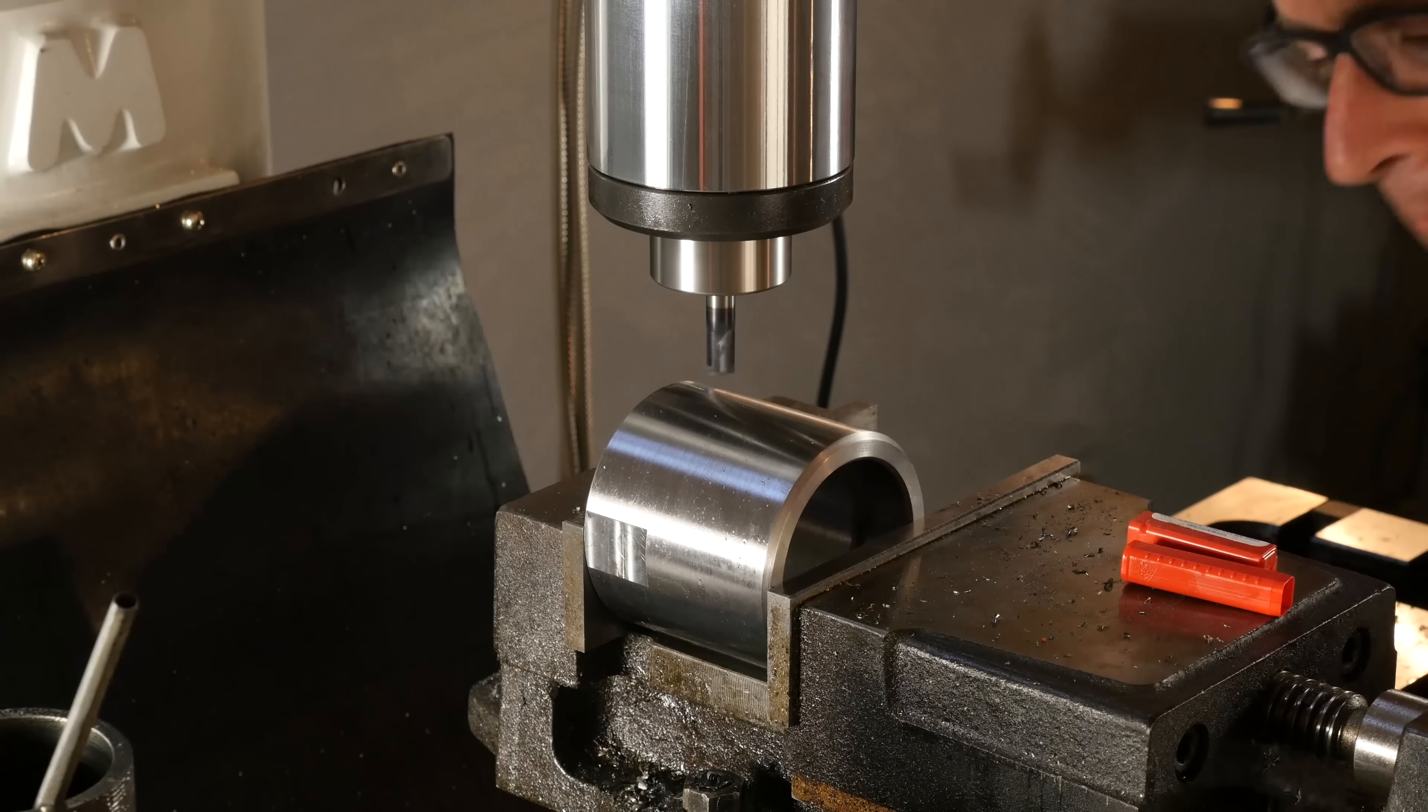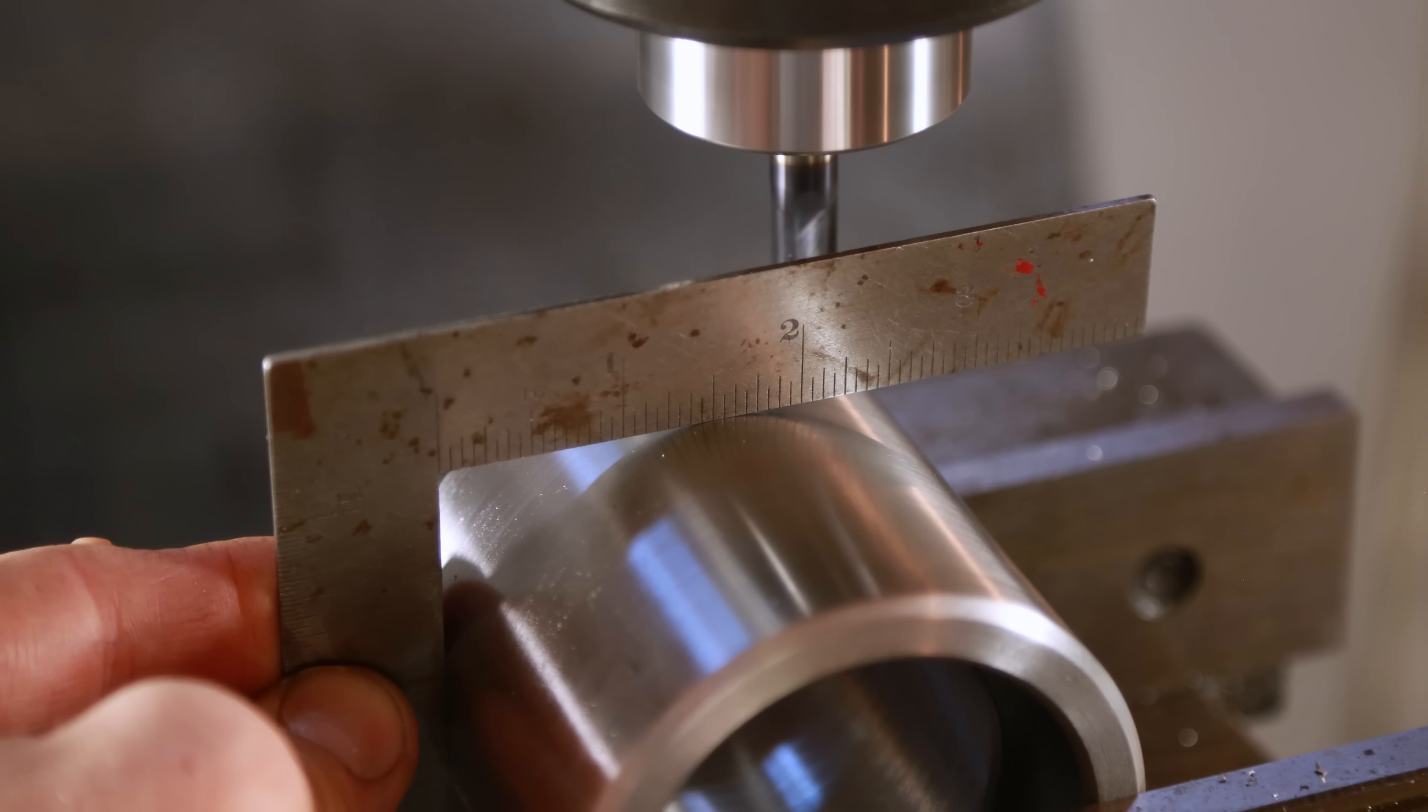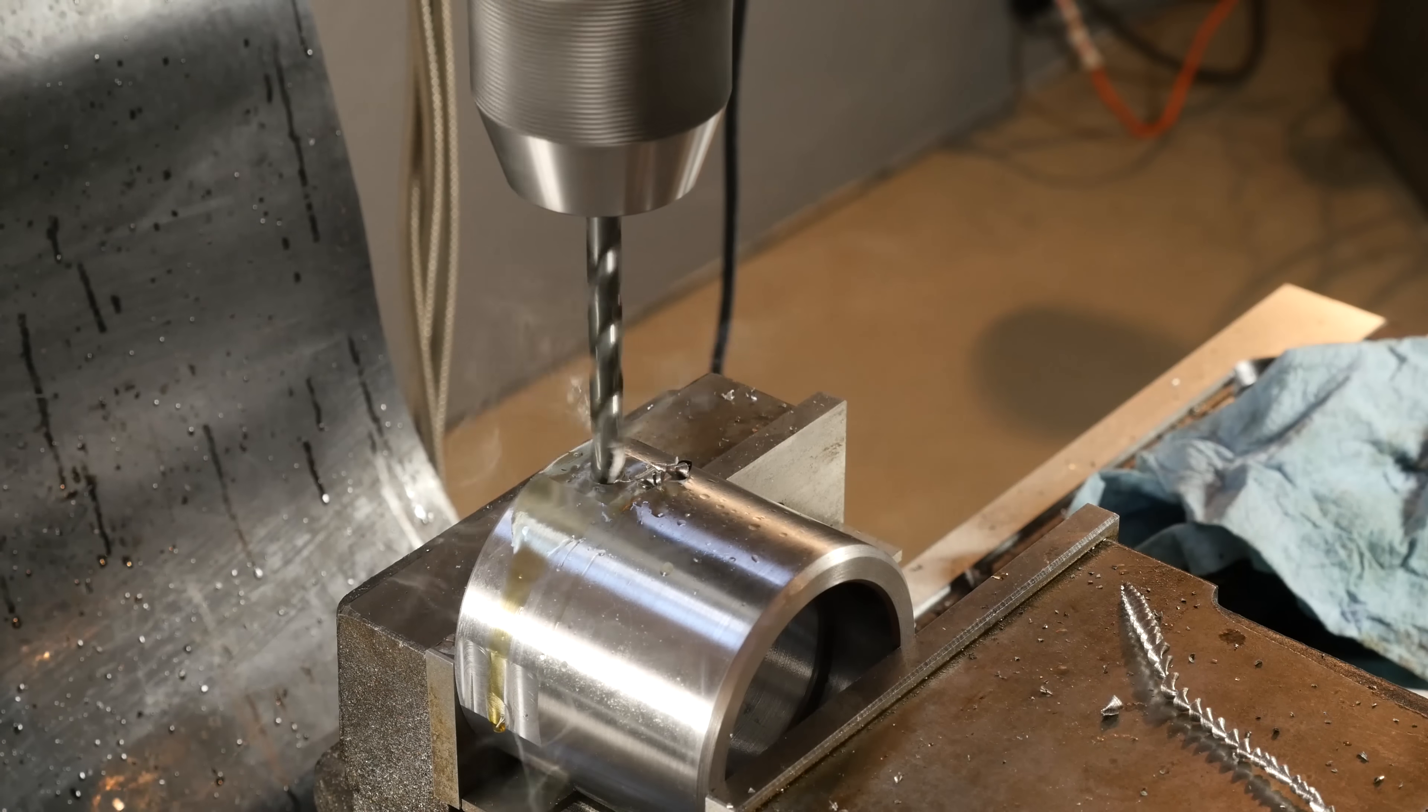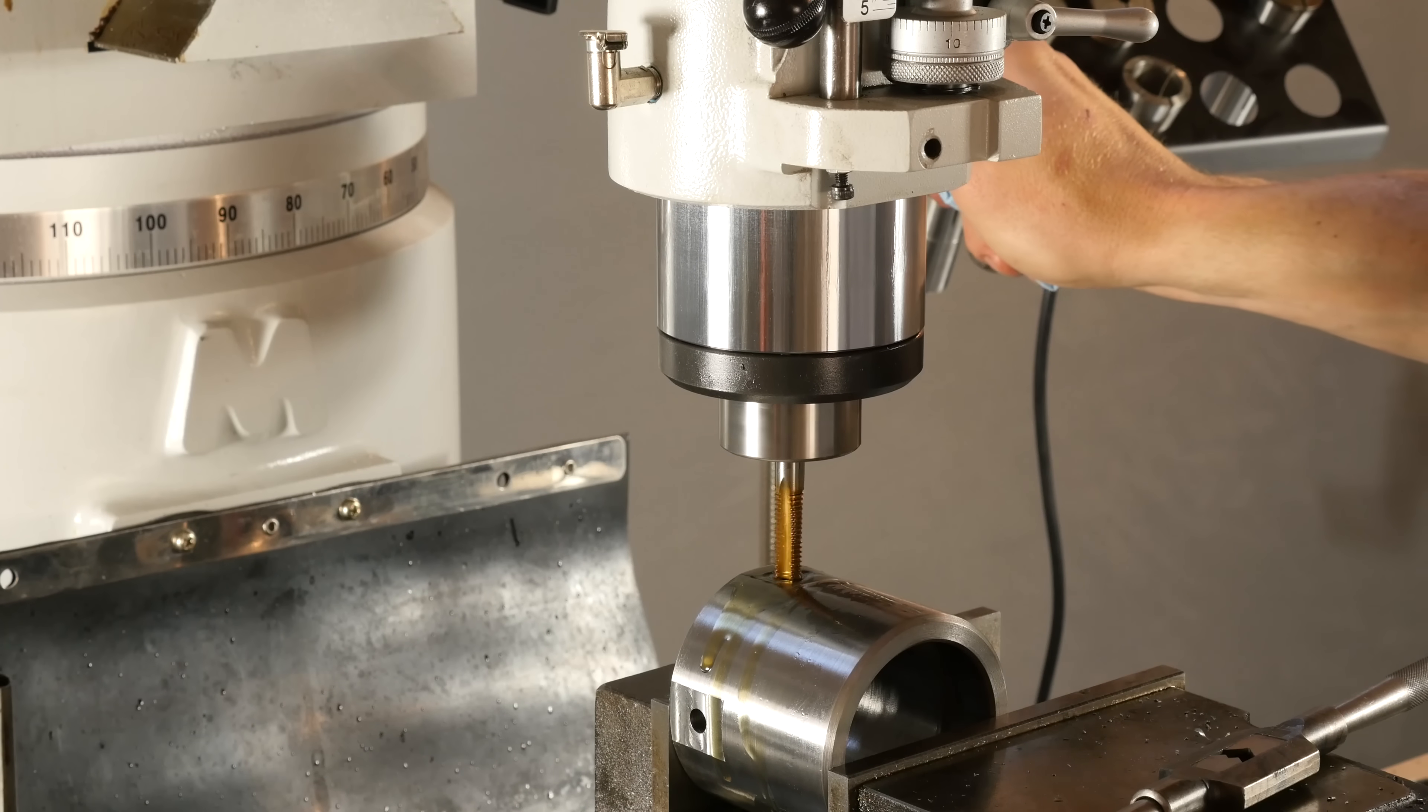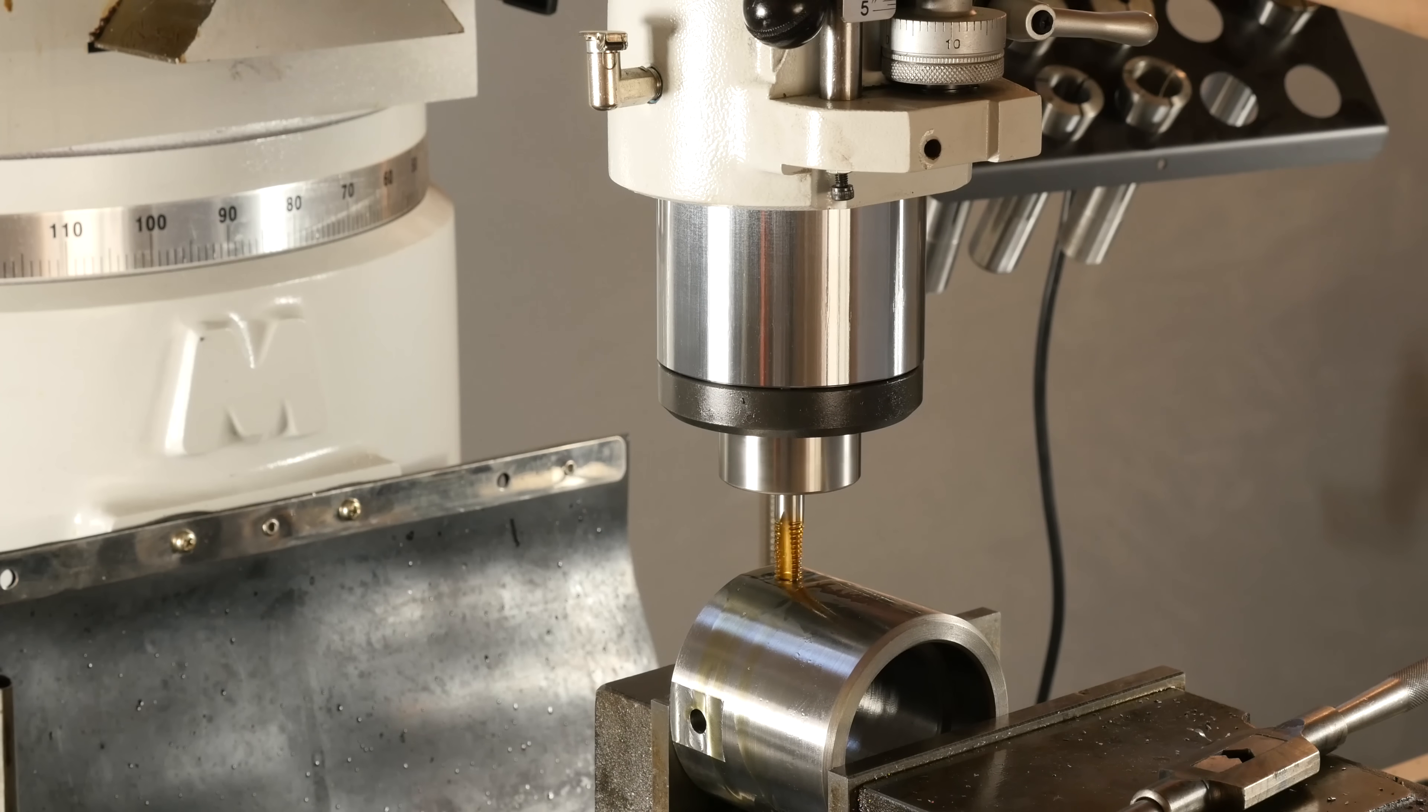Then I continued to index the body on 90 degree increments. This would have been easier had I used something like a rotary table, but I was able to get these angles pretty much spot on just by using the surfaces that I had milled. The next step was to drill holes on the four quadrants and then I power tapped the holes for 3/8-16.